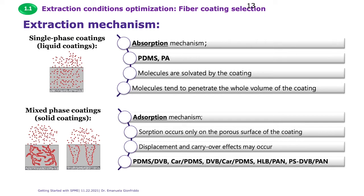However, saturation and displacement phenomena do not happen often when method optimization is carried out properly. There are tricks to make sure your SPME fiber doesn't saturate. Examples of solid coatings are PDMS-DVB, Carboxen-PDMS, DVB-Carboxen-PDMS, HLB-PAN, and PS-DVB-PAN.